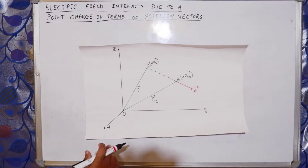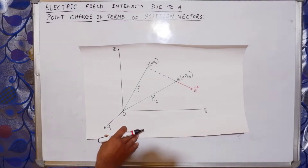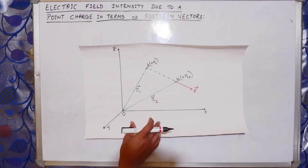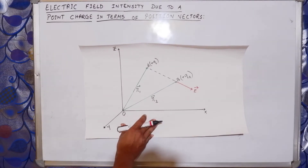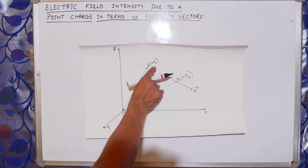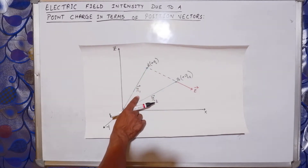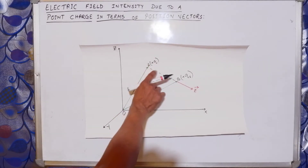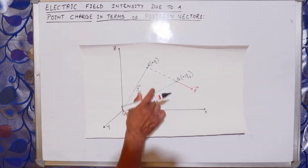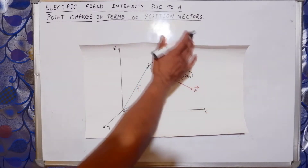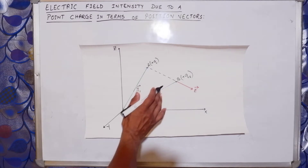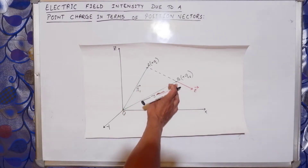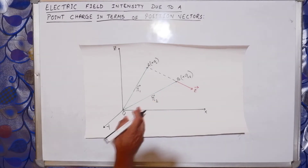Today we will find the electric field intensity due to a point charge in terms of position vectors. In this diagram, we have a point charge plus Q placed at point A, which has position vector R1 from O. This charge sets up an electric field around itself. We want to find the electric field at point B, which is at position vector R2 from O.